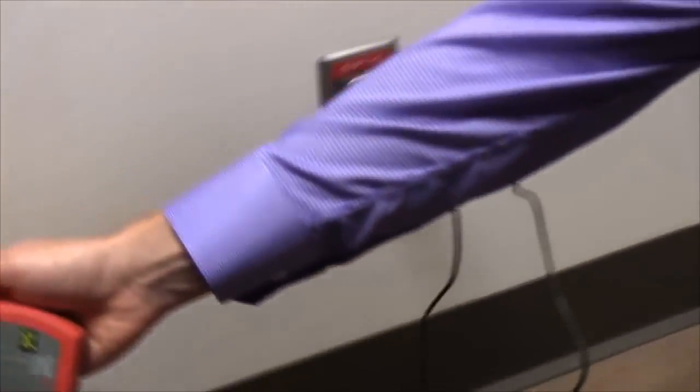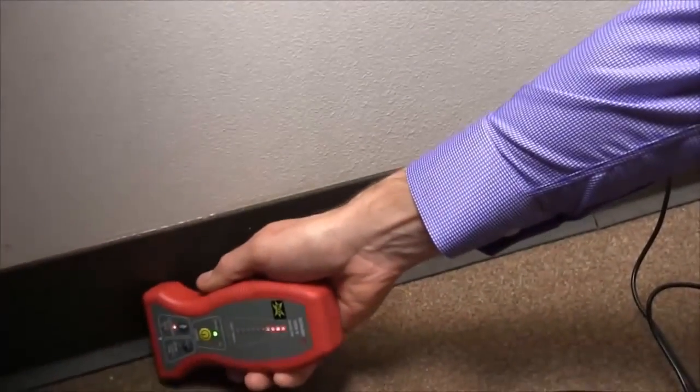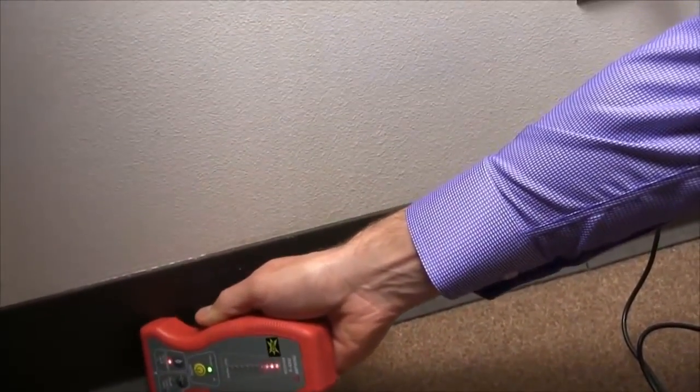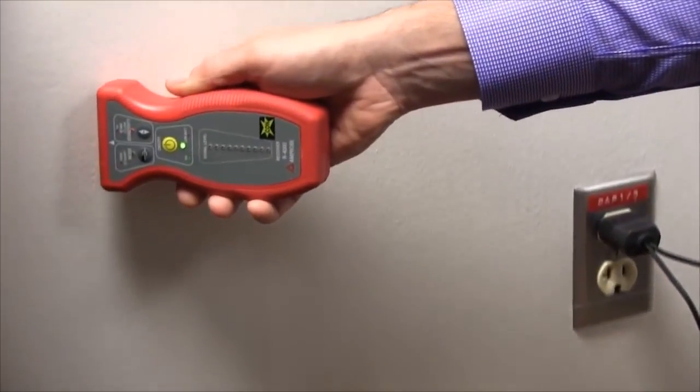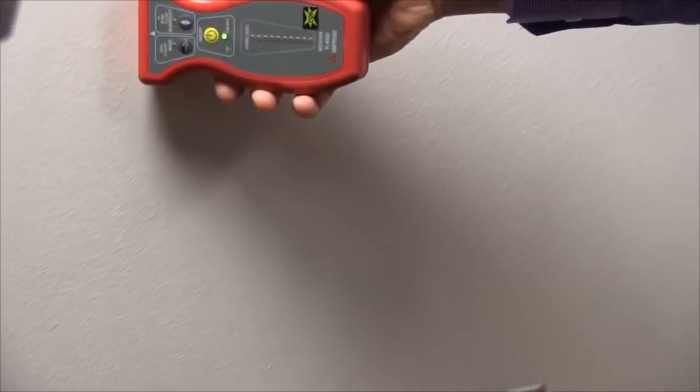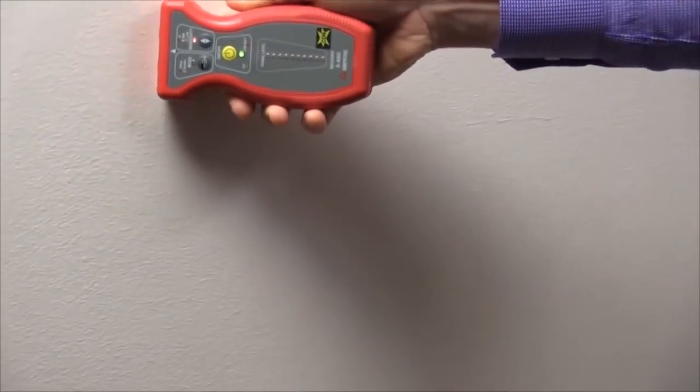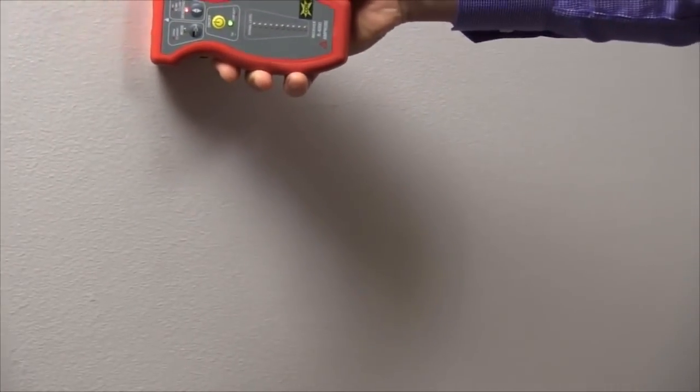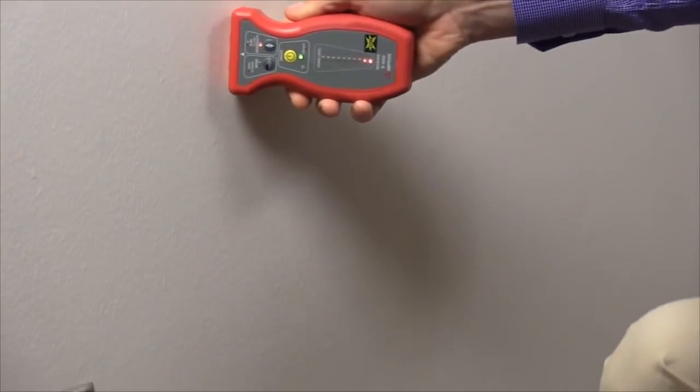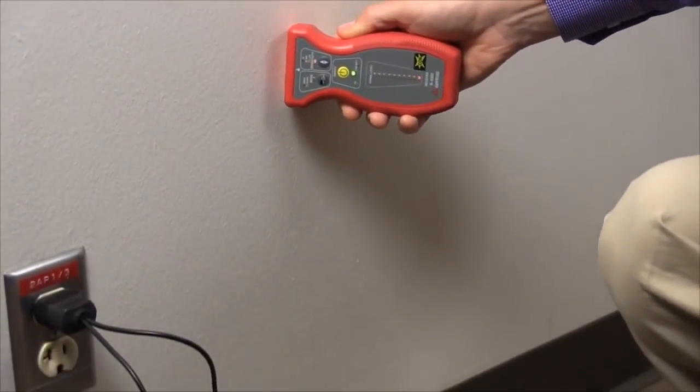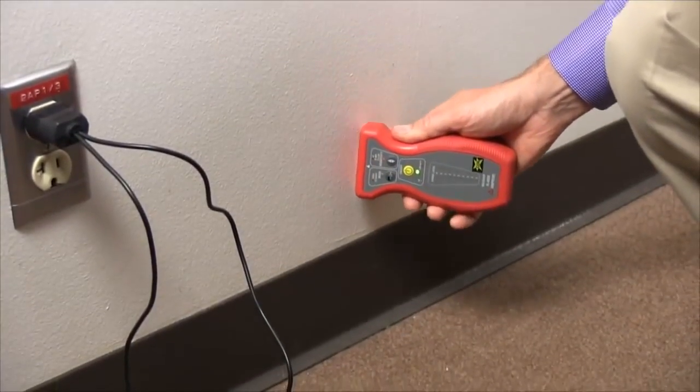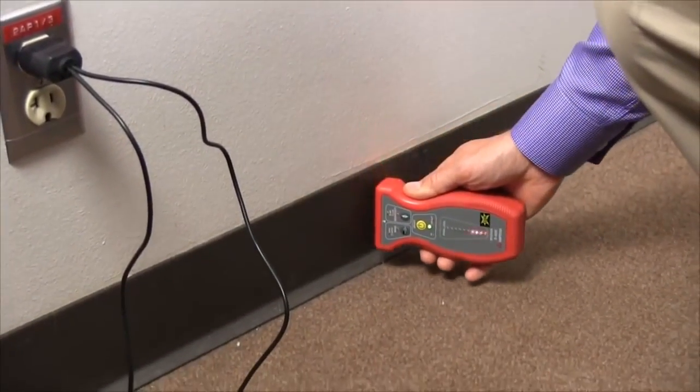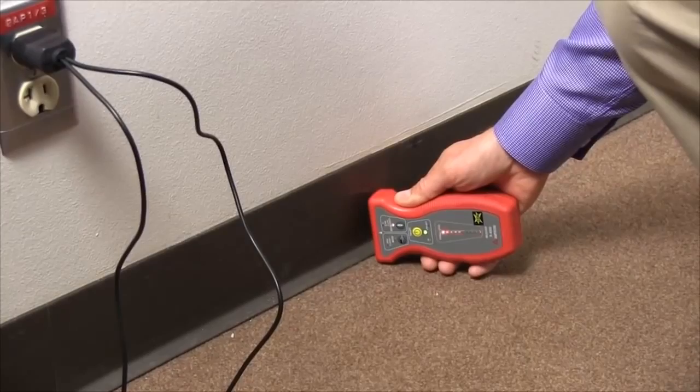Then we will go around the outlet trying to find where this wire is. We're looking for some sort of sustained signal out of the unit. The receiver occasionally has a hit, but nothing too strong until we get all the way down to the floor.